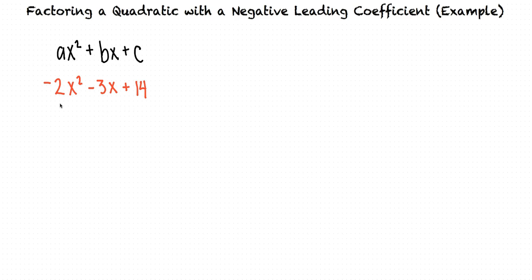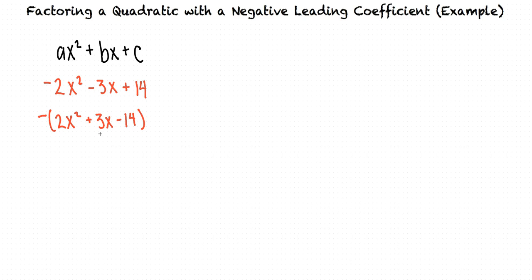When we have a negative a term, we want to start our factorization process by pulling the negative out front. When we do this, we write all of the other terms as having signs opposite as before, because it's like we multiplied negative 1 times 2x squared, negative 1 times 3x, and negative 1 times negative 14. These two expressions are the same.